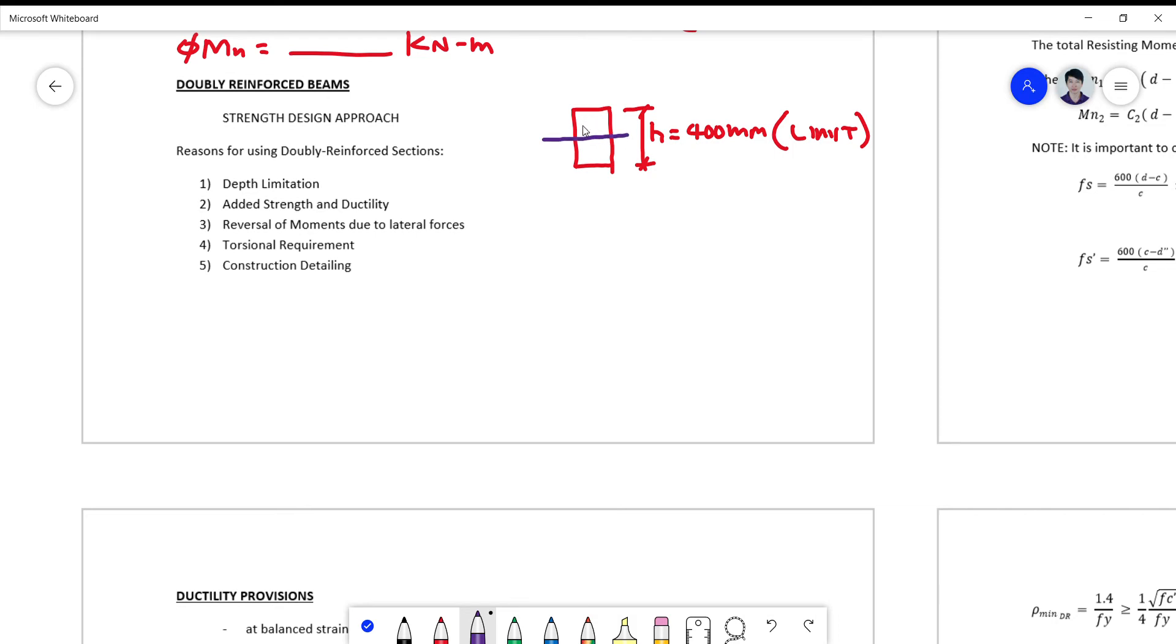So my compression area, which is normally at the top fiber, this is a positive bending beam, can no longer accommodate any additional height but rather I can only adjust the width. But since the beam is only effective when your depth over width ratio is limited to about 2.0,